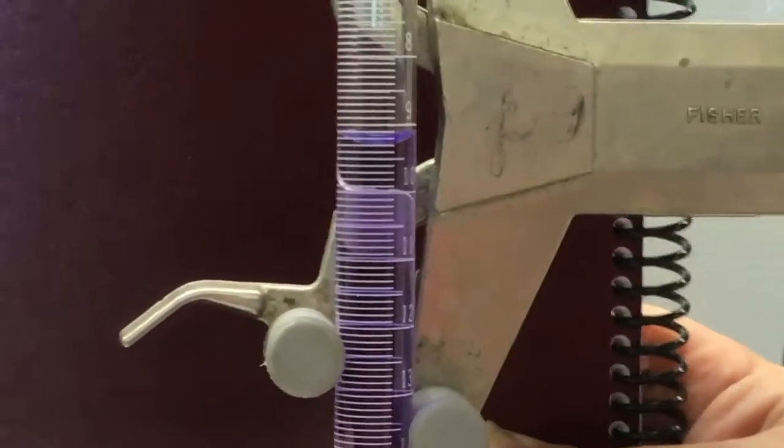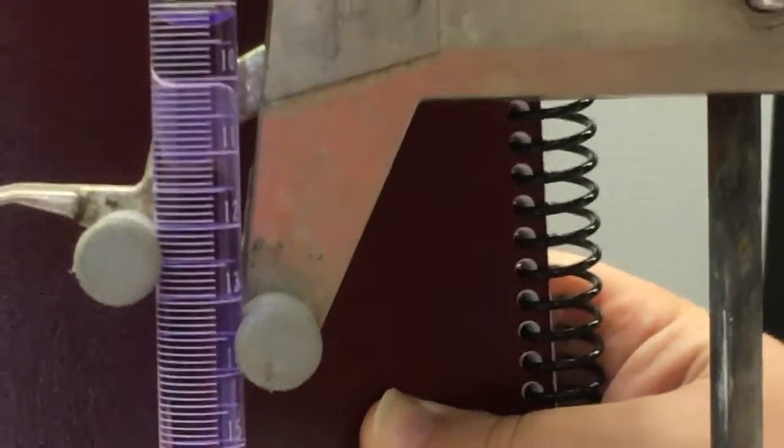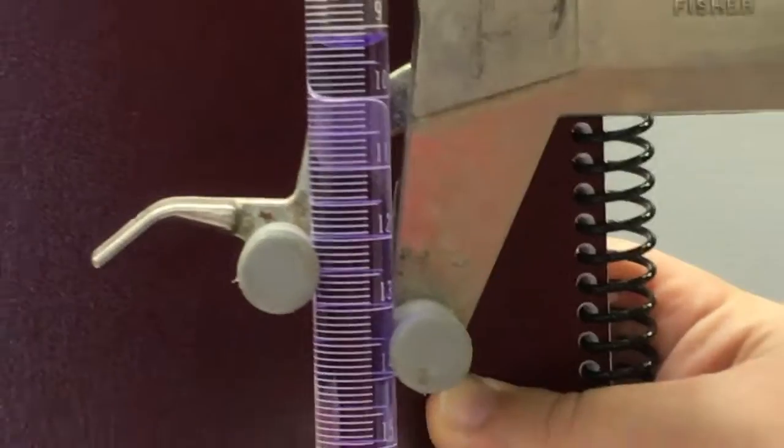Now remember the rules about significant figures. You always estimate the last digit. So looking at the gradations here, you would read this instrument to the hundredths place for milliliters. That is, you grade it down to the tenths place, 0.1 milliliters. You read it to 0.01.